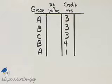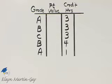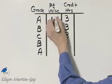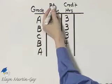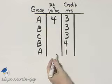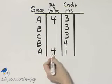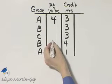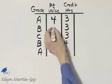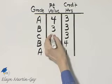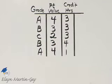Let's find the grade point average given these grades and these credit hours. Grade point average is like a weighted mean depending on the grade you make. We assign four points for an A, and I'm going to fill in the point values here. This is an A. A B is given three points, and a C is given two points.